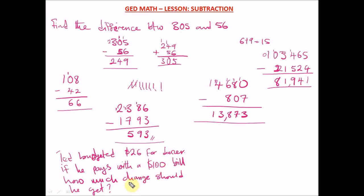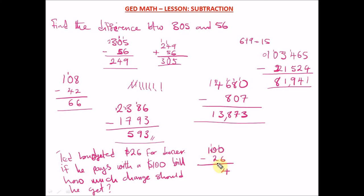So we have 100 minus 26. Can we take 6 from 0? No. Can we borrow from the next zero? No. So we borrow from the hundreds digit — that becomes 10 in the tens column, which then gives 10 in the ones column as well, leaving 9 in the tens. 10 minus 6 = 4; 9 minus 2 = 7. The change Ted should receive is $74.